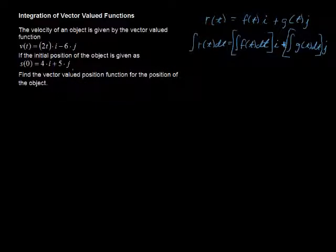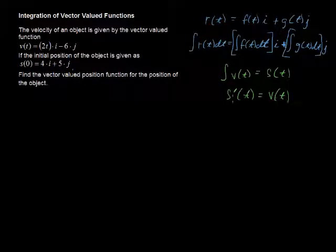Okay, so let's remind ourselves that the integral of the velocity function equals the position function, or another way of saying that is the first derivative of the position function equals the velocity function, because the first derivative is that rate of change. So what we want to do to find the position function is to take the integral of the velocity function. So let's do that here.